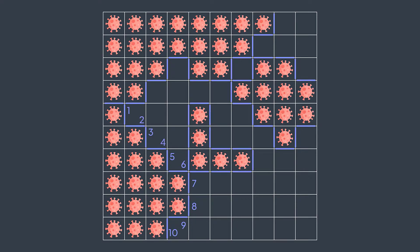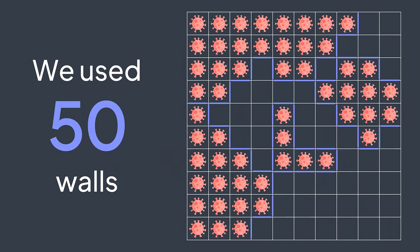Now all areas are surrounded and the virus has stopped spreading. In total we used 50 walls, so our output is 50.